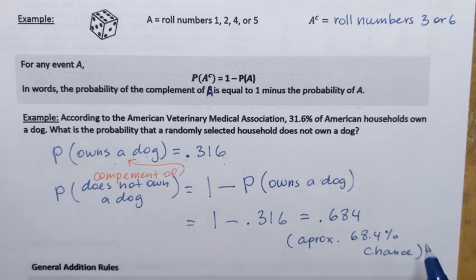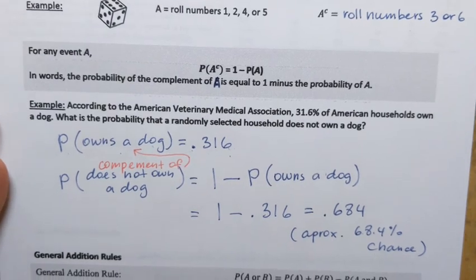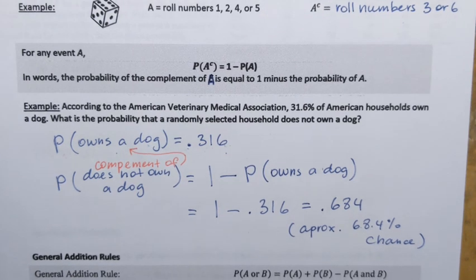The probability that the randomly selected household does not own a dog is about 68.4%. That's how you use the complement rule for probability.